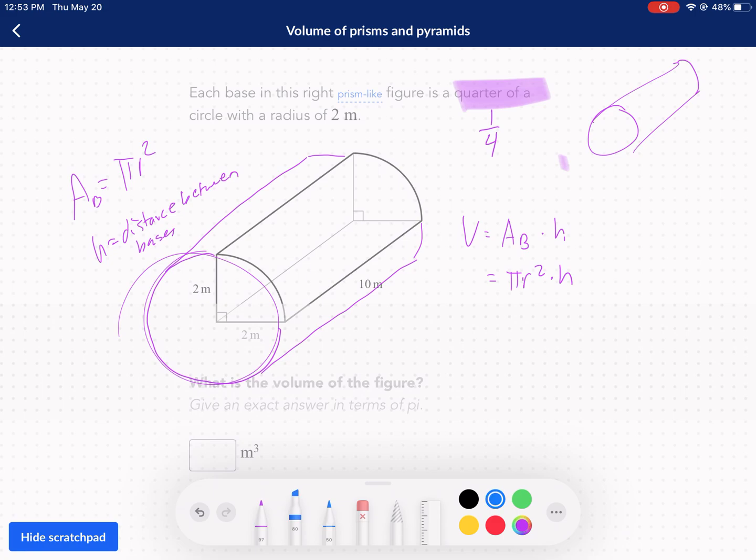Now the distance between these bases then is 10. That's the height. If you were to stand this up like a soup can, h would be your height. Now with the radius, we already know radius is 2, so we can go ahead and plug everything in and we can get the volume. Now that's the volume of the whole thing. We're going to do one fourth of that later. Don't forget about that. Let's go ahead and plug and chug.